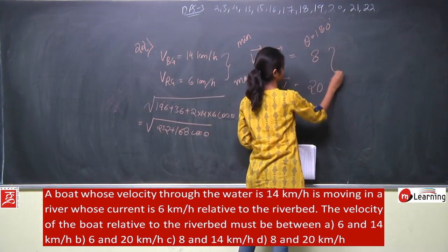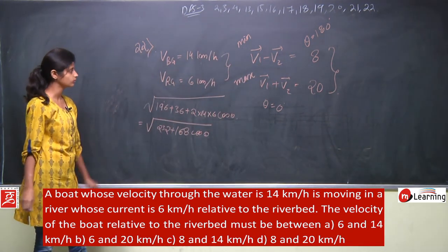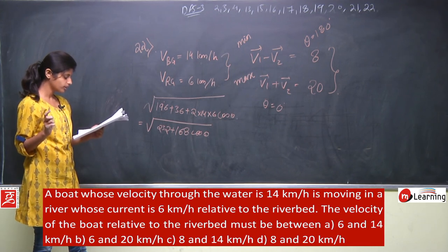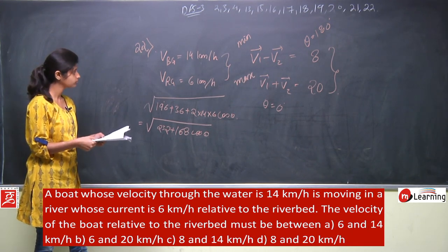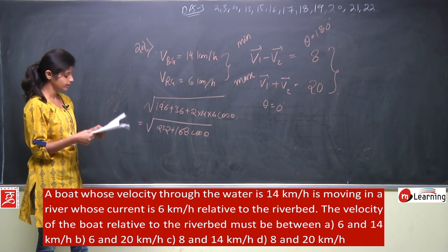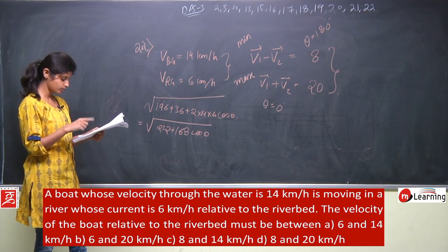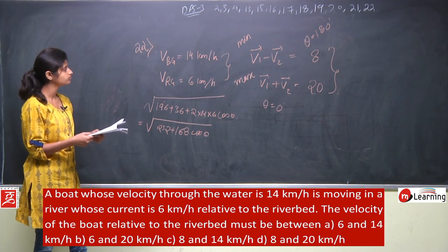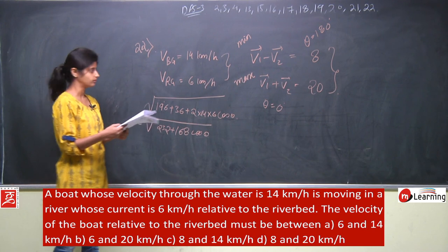So the velocity of the boat relative to the river bed must be between 8 and 20 km/h. The answer is option D: 8 and 20.